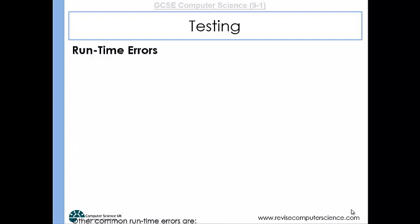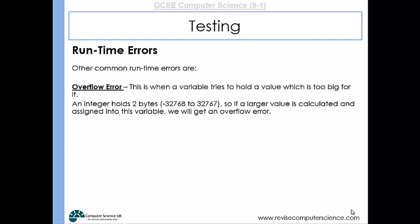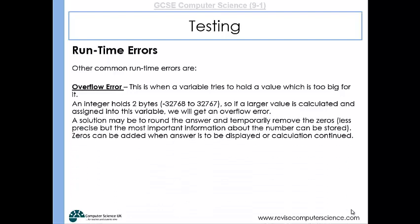Other example runtime errors are overflow errors. So this is where a variable tries to hold a value that's too big for it. So an integer holds 2 bytes. So if a larger value is calculated and assigned to that variable then you get an overflow error.